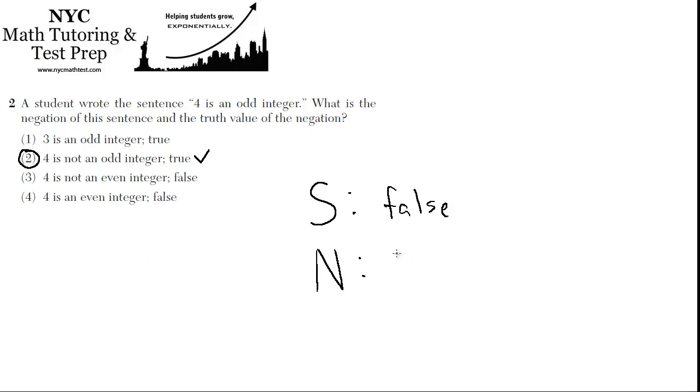Why couldn't it be, so the truth value is, the negation is true. Now why couldn't it be this one? 4 is an even integer. Isn't that